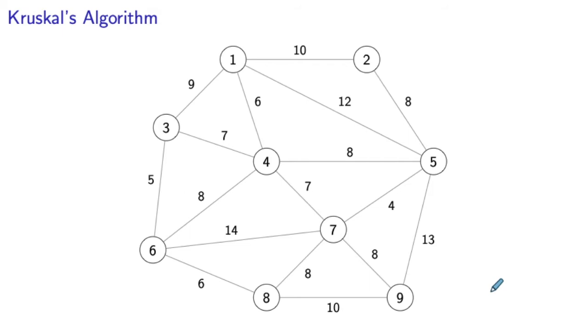We start by picking the minimum-weight edge in the graph. We can see that the smallest weight of an edge that we have is four, and it corresponds to the edge five-seven.